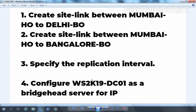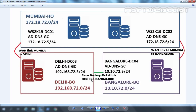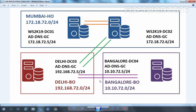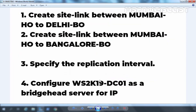We will also specify the replication interval because we are treating this link as a backup link, so we need to change the cost of that site link as well. And fourth, we want to configure our ws2k19-dc01 as a bridgehead server for the IP transfer protocol. So let's move to our DC01, the domain controller where we are going to perform all these operations.